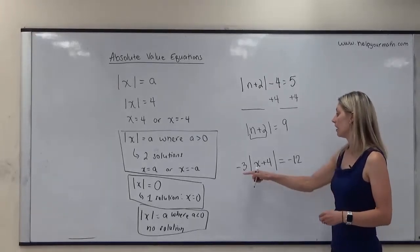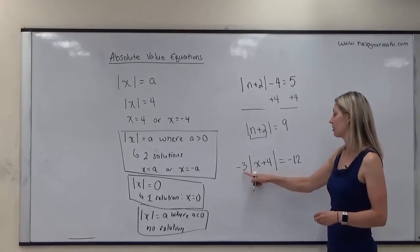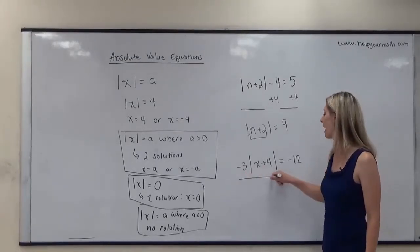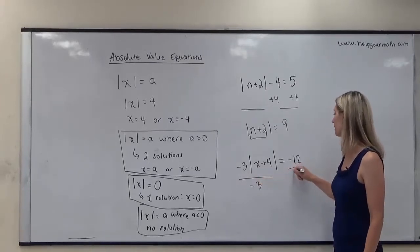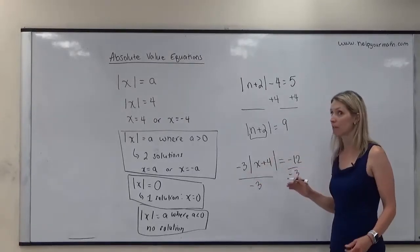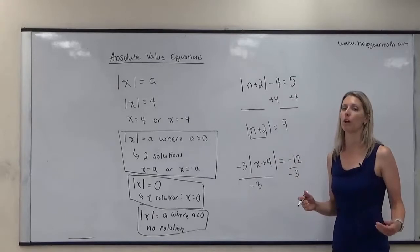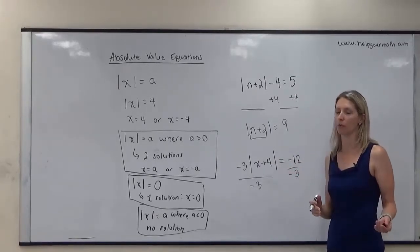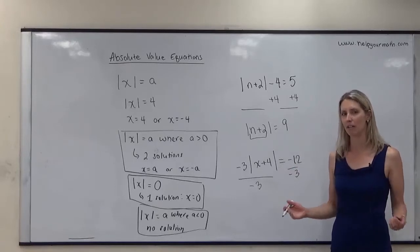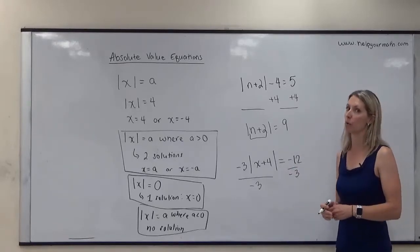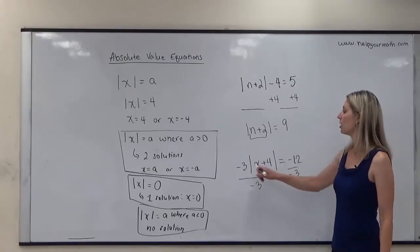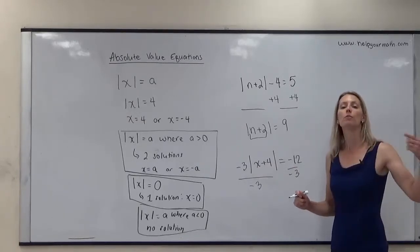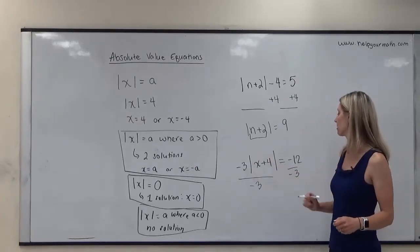Instead, since negative 3 is being multiplied, we undo multiplication by dividing both sides by negative 3. If you distribute negative 3 inside the absolute value it will give a wrong answer — even though it sometimes produces the correct result for positive cases, it is mathematically incorrect and your professor will likely deduct points.